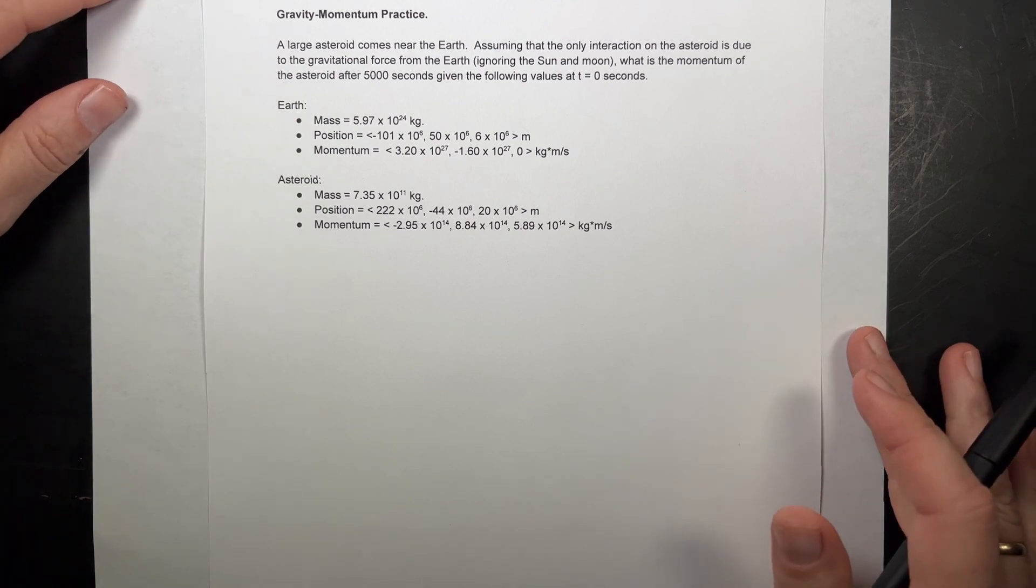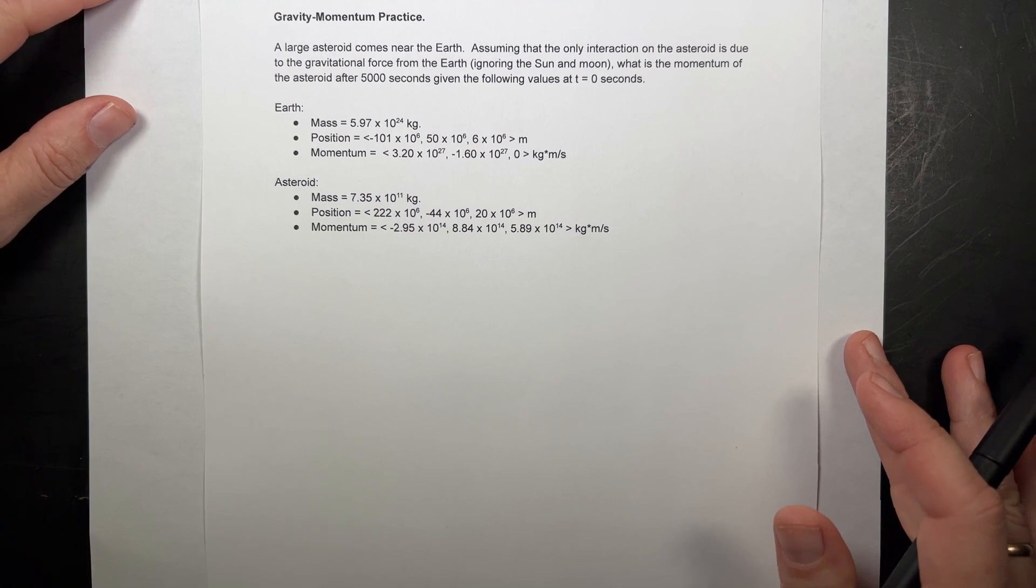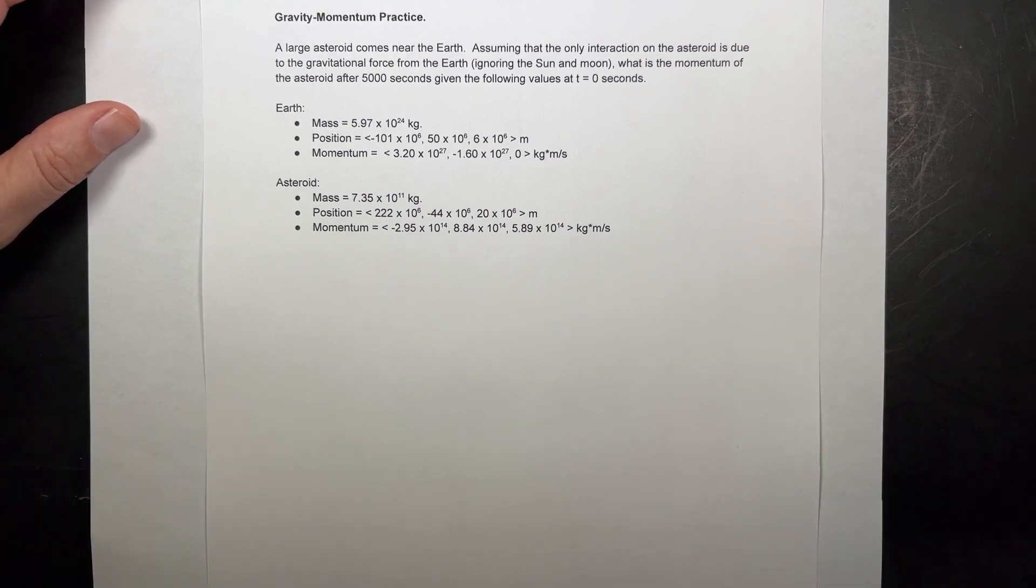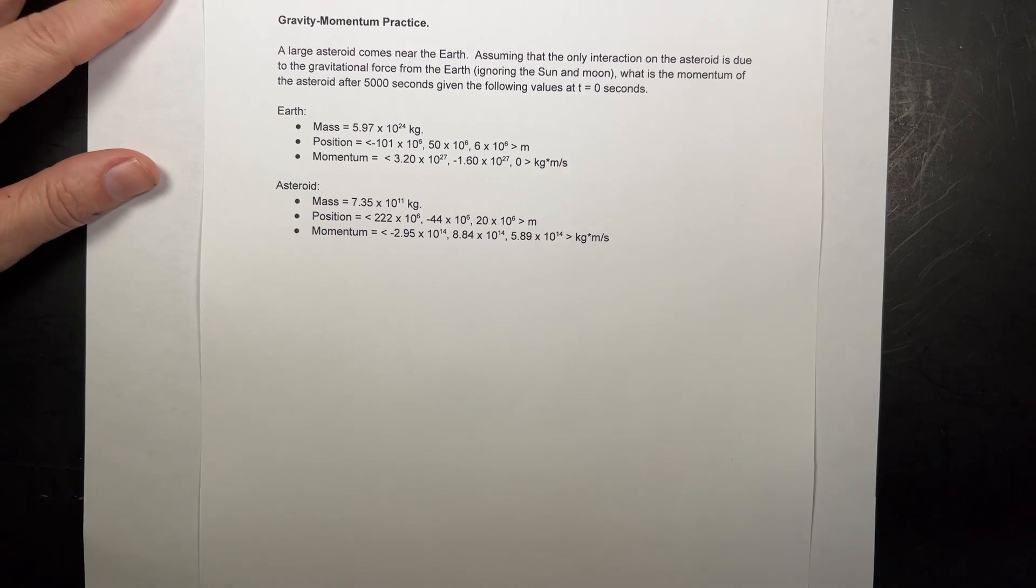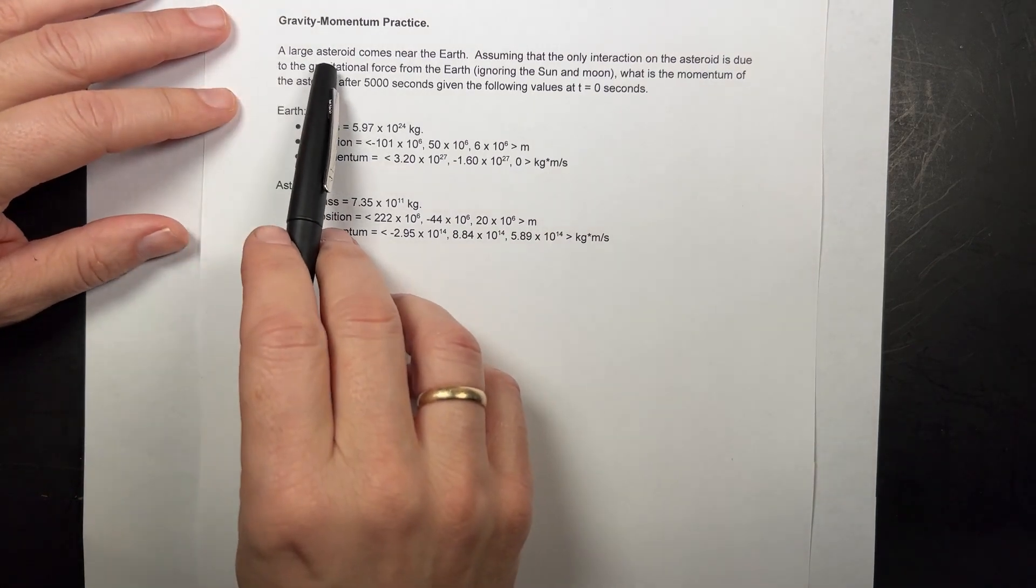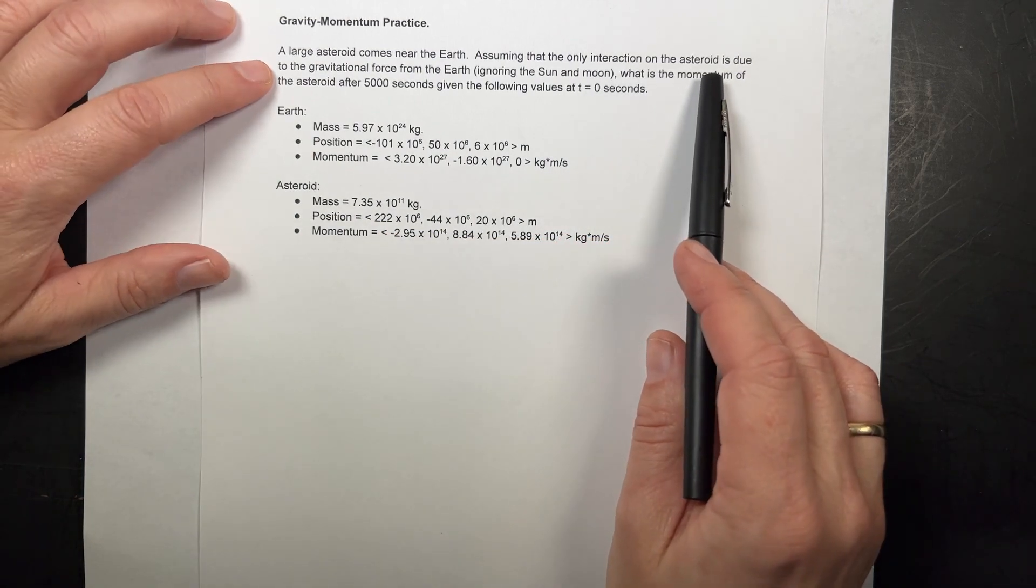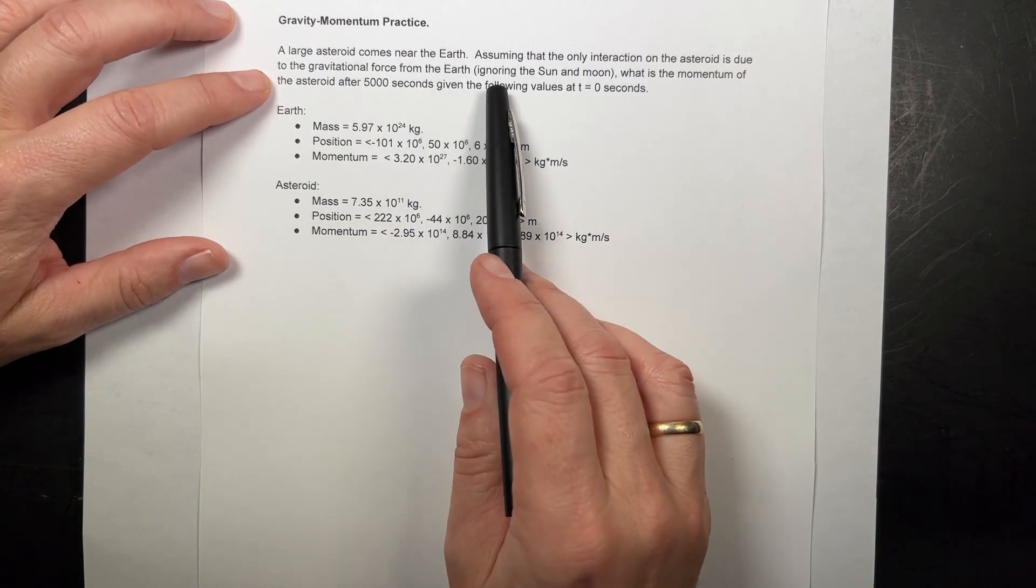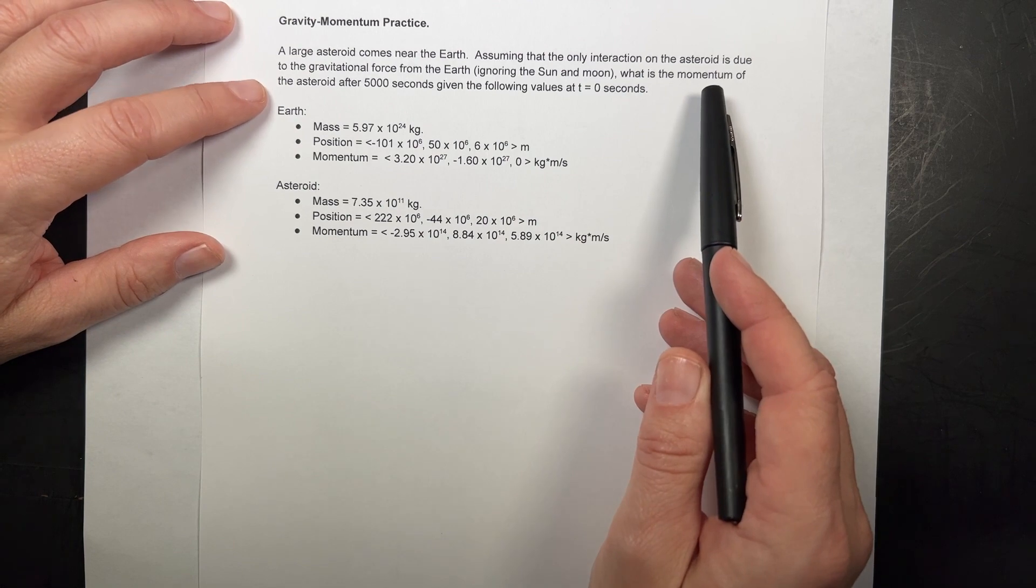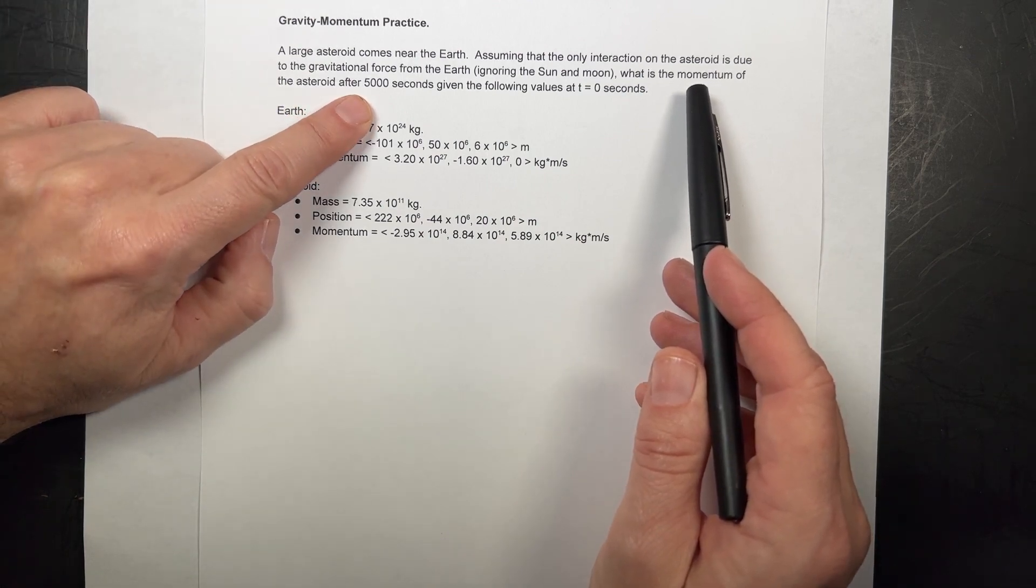Here is a practice problem using gravity and the momentum principle. I printed it out and made it a little too small, so let me just read it to you. A large asteroid comes near the Earth. Assuming that the only interaction on the asteroid is due to the gravitational force from the Earth, ignoring the Sun and the Moon, what is the momentum of the asteroid after 5,000 seconds?